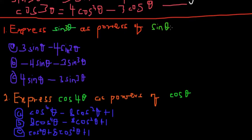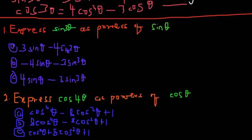This might be a multiple choice question where we have option A, option B, and option C. There's also another example: cos(4θ) expressed in powers of cos(θ), again with options A, B, and C. With the traditional method you might start by expanding using binomial expansion to arrive at one of the options, but in this video we'll do it the straightforward, simpler way.